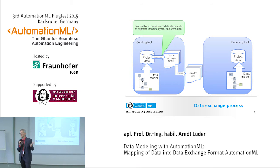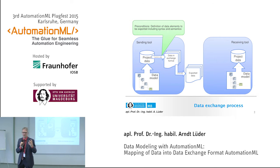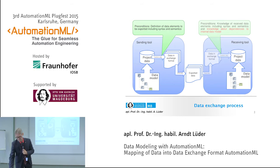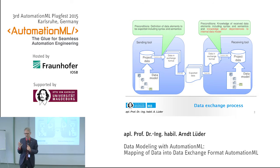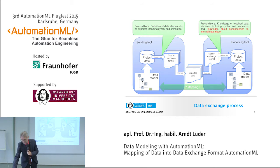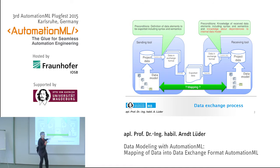The sending tool can make it easy — it takes the data and writes it out. But it has one precondition: the definition of data elements to be exported, including syntax and semantics. The reading tool, the receiver, has to know the same, but with one addition: it has to have knowledge about the dependencies to its internal data model. It has to interpret the received information, so what we in fact need is a mapping between the data models of the receiving and the sending tool.